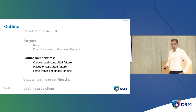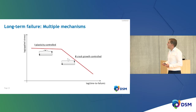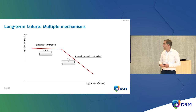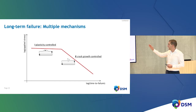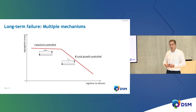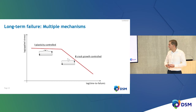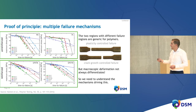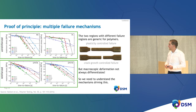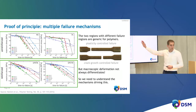To understand the R-value dependency, you need to understand the failure mechanisms. For long-term failure, you see multiple failure mechanisms. Plotting log applied load versus log time to failure (or cycles), you typically see a flat-slope region called plasticity-controlled failure, and at longer times and lower loads a steeper-slope region called crack-growth controlled failure. This originates from a long history of pipe testing but is also valid for different materials, as shown in our paper demonstrating this for two unreinforced and two glass-fiber reinforced materials.